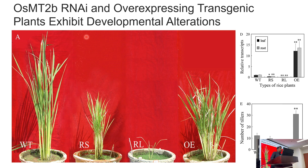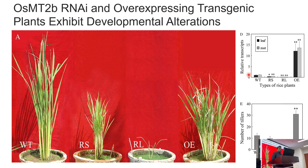When we create an RNAi plant or an overexpression plant, the plant exhibits developmental alterations. In the wild type versus RNAi silencing lines, the overall growth is reduced. When we create the double mutant, overall growth is even more suppressed. When we create the overexpression line, it shows a different number of tillers — the overexpression shows an increased number of tillers, while decreasing expression through RNAi lines results in very reduced growth.